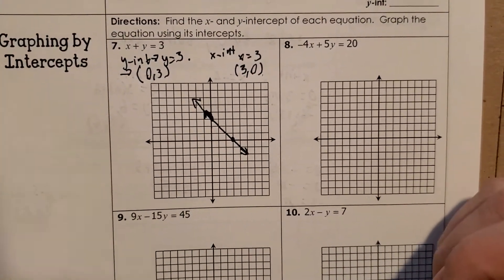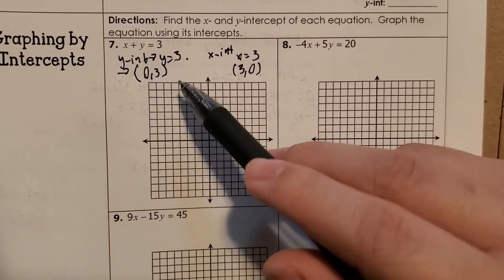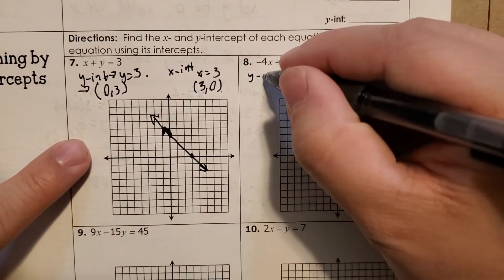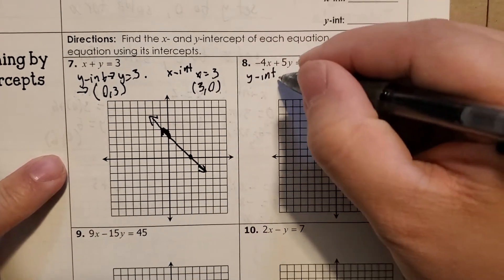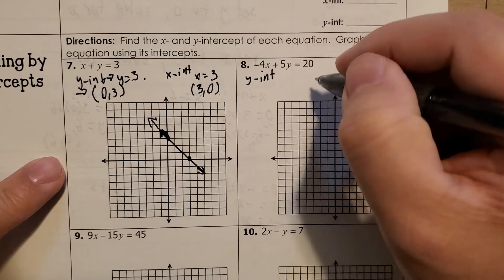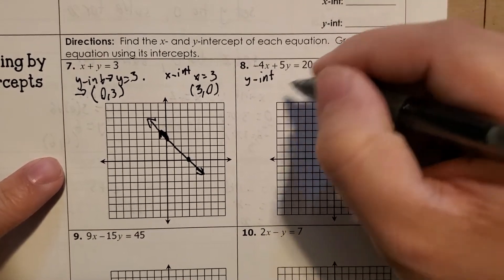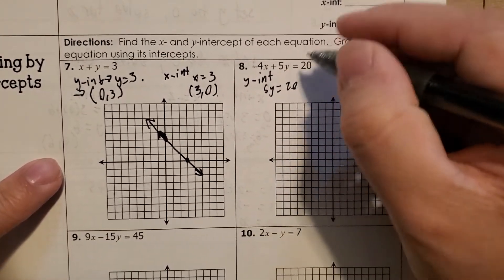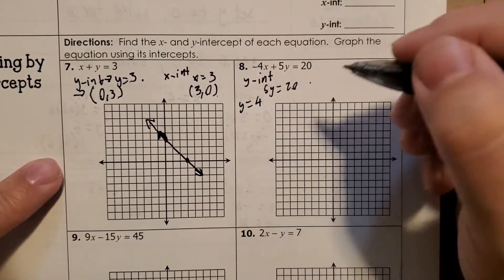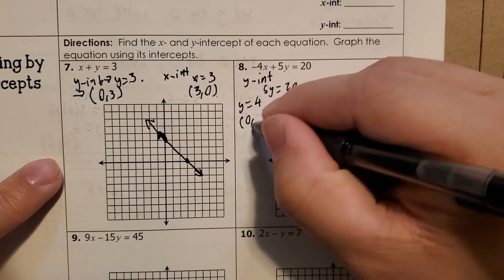I'll do one more here because this one was pretty straightforward with the zeros and stuff like that. Let's put some coefficients in front. So again, if I want to find my y-intercept, you can find either one, whichever order you want. Our y-intercept, we're going to set that to 0, so that cancels out. So we get 5y equals 20. So then y is going to equal 4. So then we get the point 0, 4.